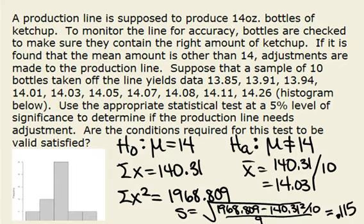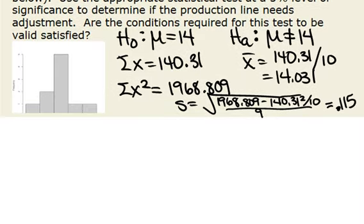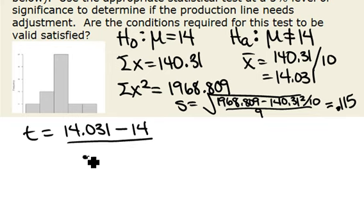To get our test statistic for doing this test, it's a t and it will be our mean of 14.031, we subtract the value we're testing for which is 14, divided by s over square root of n. Our n here is 10. So what you'll get is 0.852.